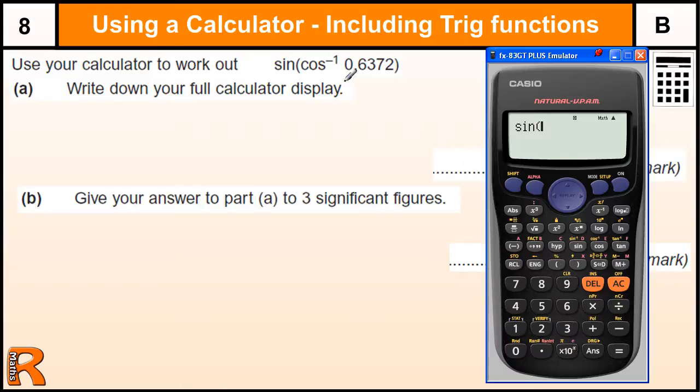So sine, open bracket, cos to the minus 1, so shift cos to get the cos to the minus 1. Now notice there's another bracket here. 0.6372, we need to close the bracket for the cos to the minus 1, and then close the bracket for the sine.